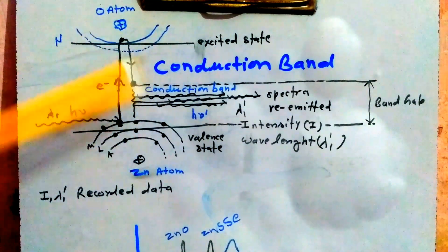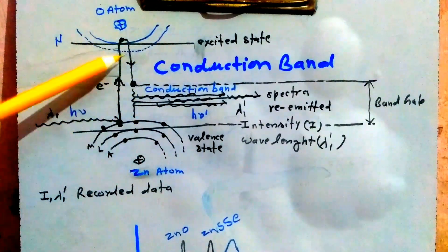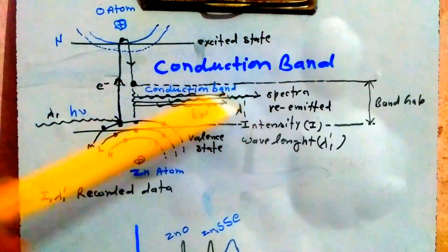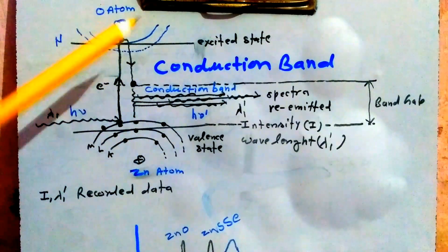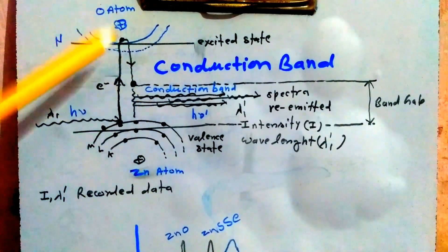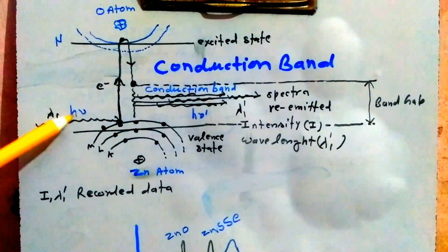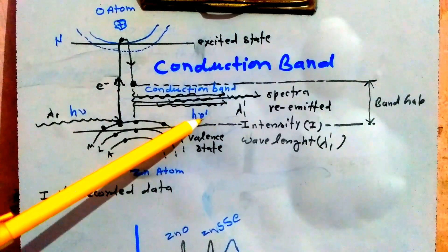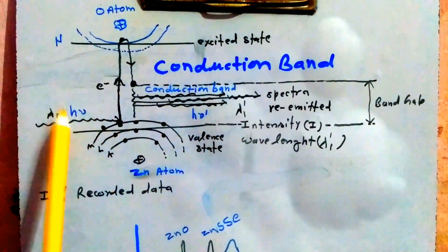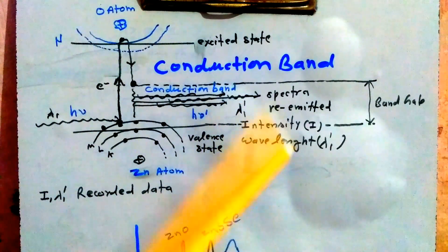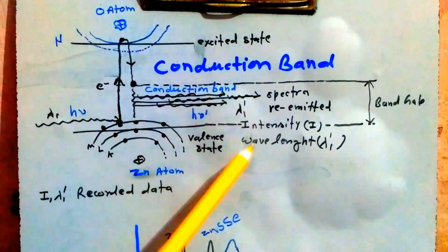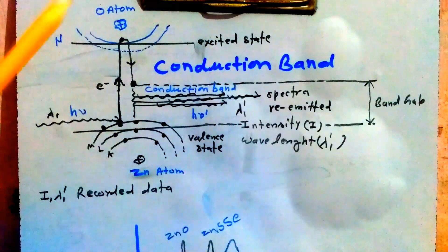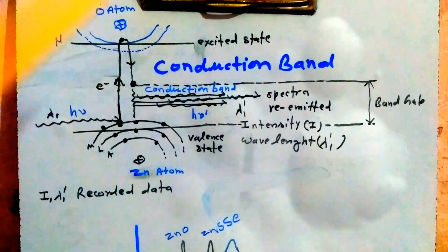The transition between two shells is the band gap — the gap between two shells where the transition is happening and the spectrum is emitted. The conduction band is the region where electron transition takes place. The energy of the incident light is thrown on the sample surface, and after re-emission the frequency changes, so the wavelength changes. This represents the change in energy between the original and re-emitted spectrum.